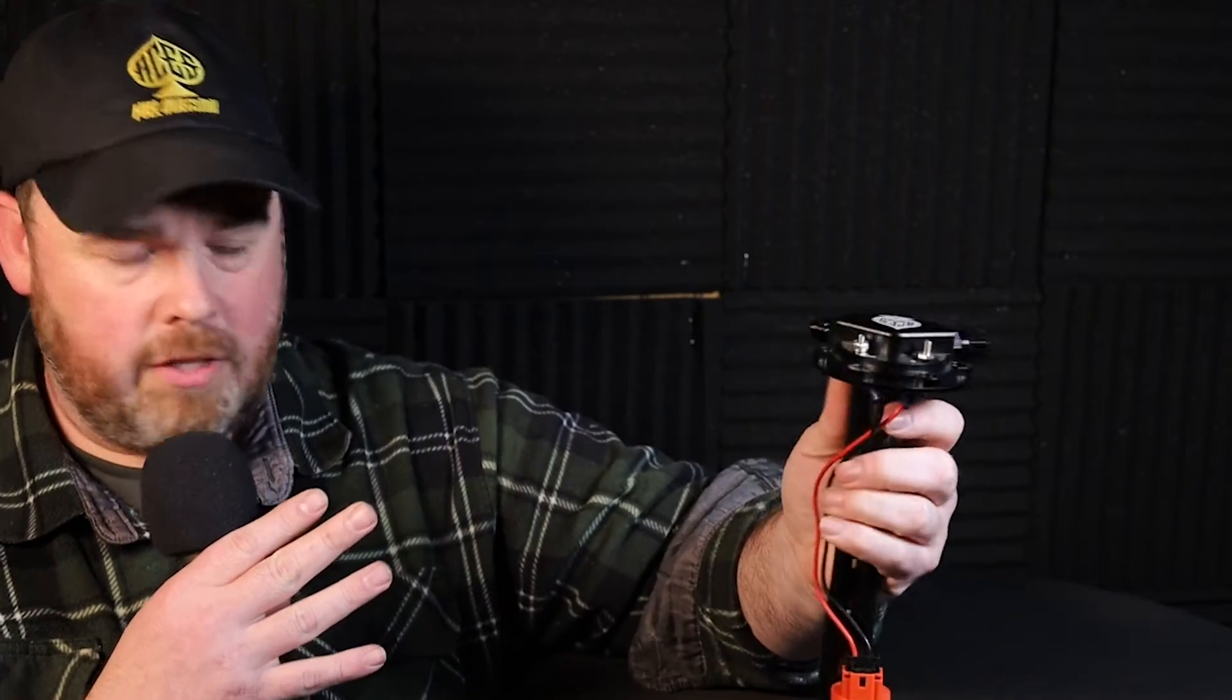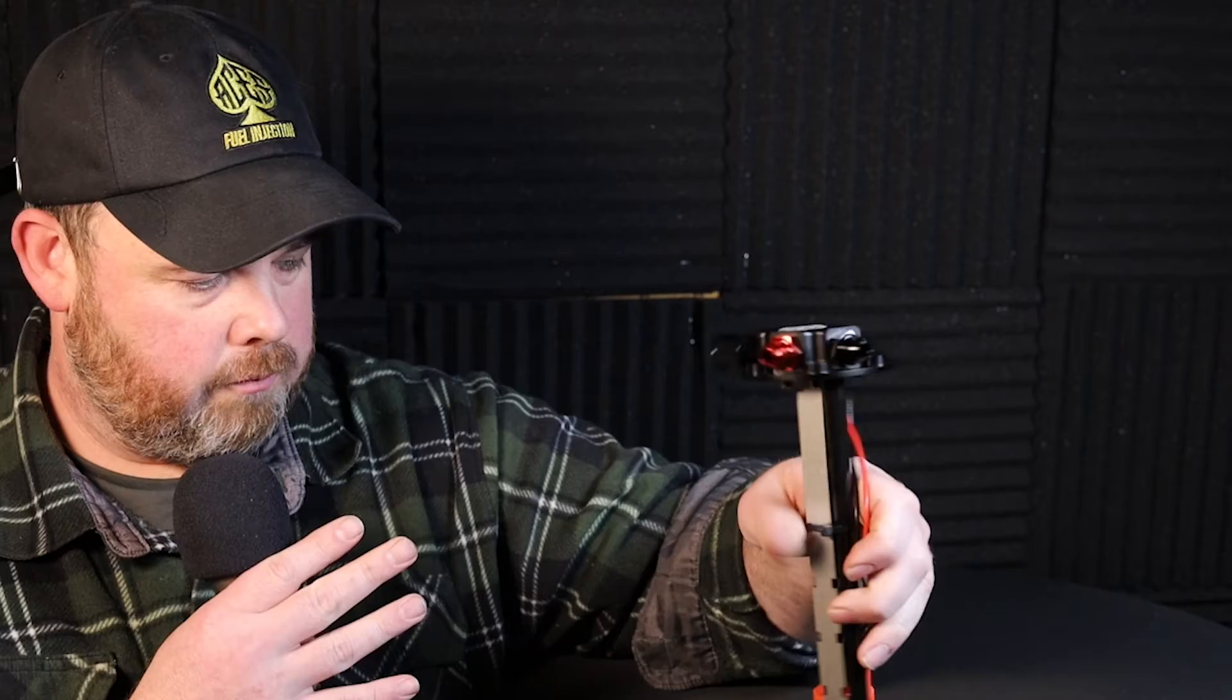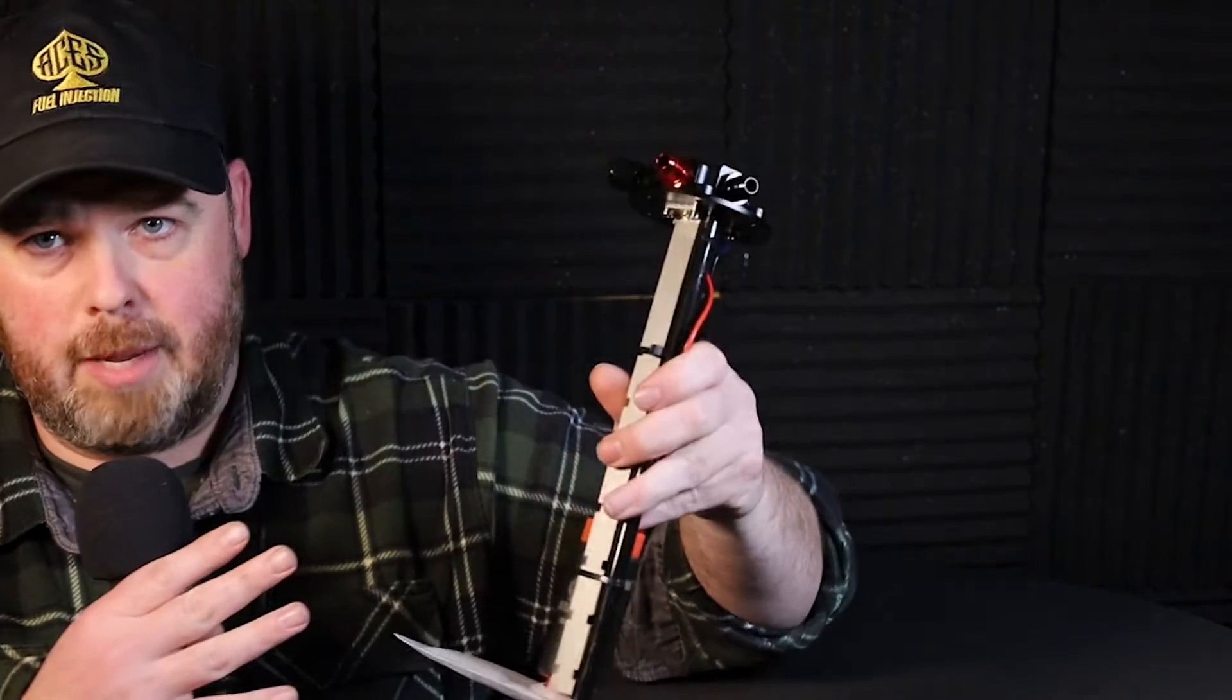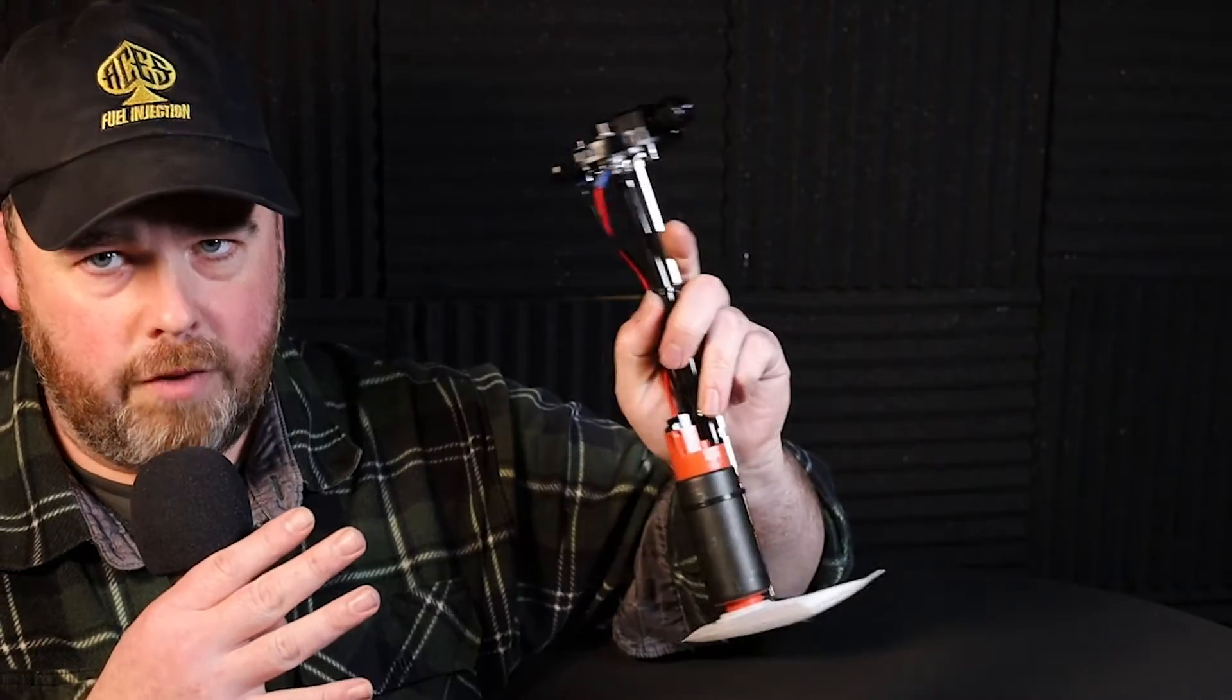It comes with a 255 liter per hour fuel pump in it too. It's adjustable depth from about 9 to about 12 inches, so really great - selectable height. It comes with a really nice hard line. You usually have to heat these when you're installing them just for ease of install, so they hold very well.